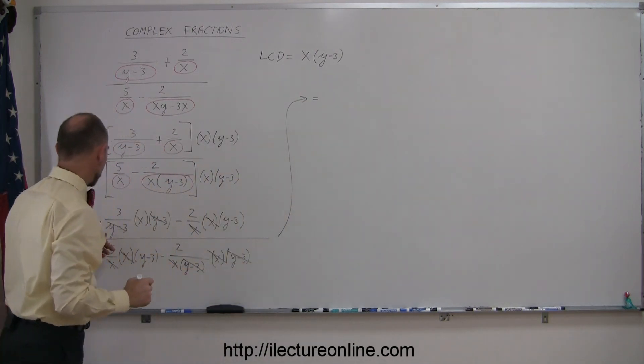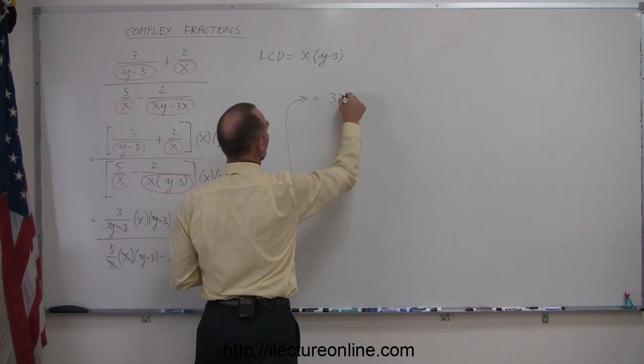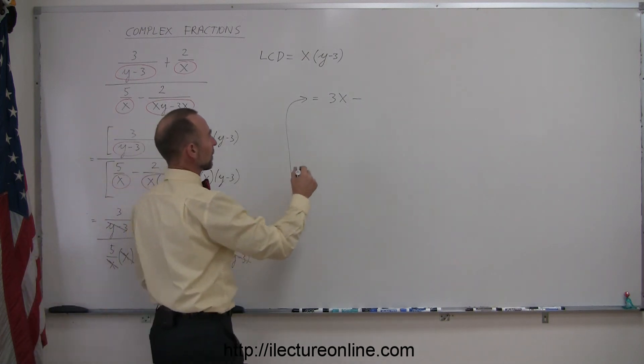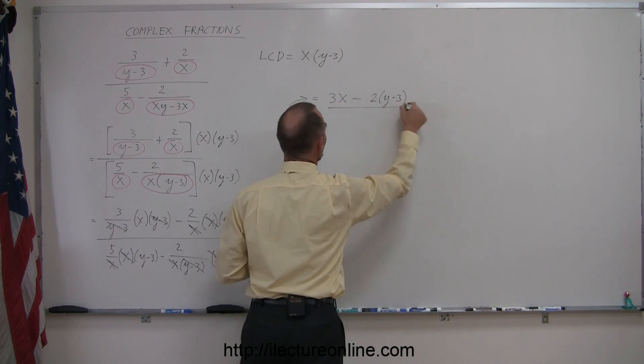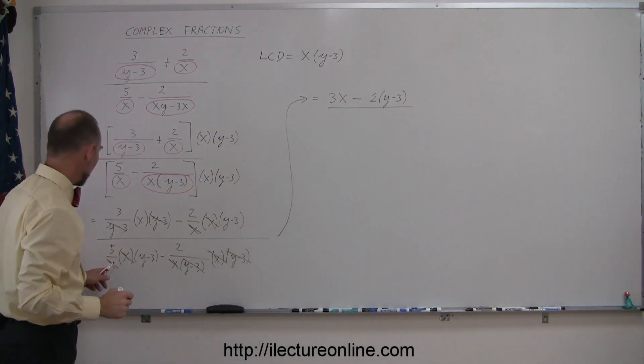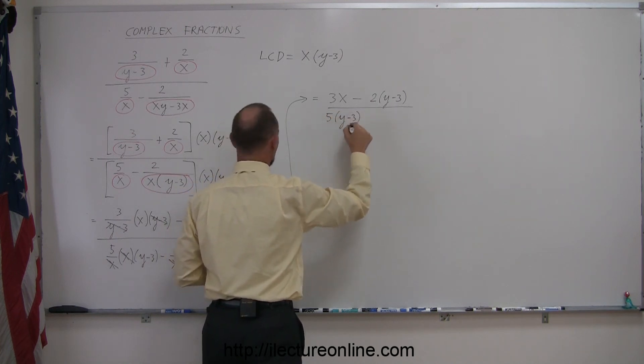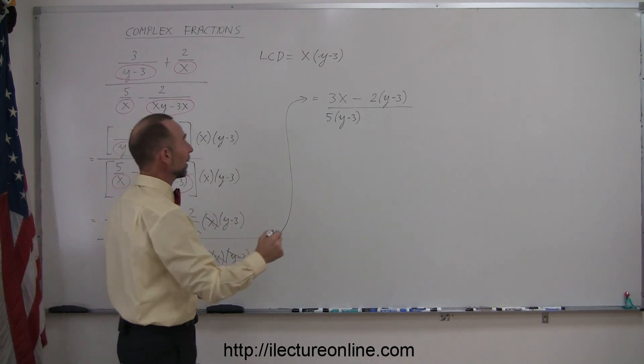I have, over here, 3 times x minus 2 times (y minus 3), divided by, here I have 5 times (y minus 3), and here I have just a negative 2, everything else is canceled out.